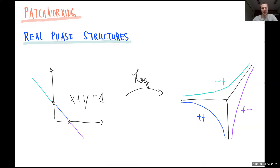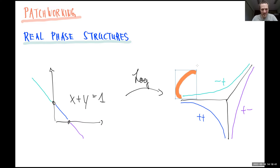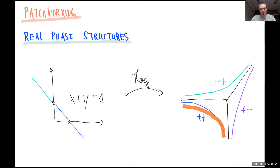We look at the amoeba or tropicalization of a real algebraic line given by x + y = 1. The logarithm map turns this line into three segments in R², and we can mark these segments with the quadrants they come from — for example the blue segment comes from the positive quadrant, so it gets the sign vector (plus, plus). The key idea is that when you converge to the tropical line, for each edge you remember the quadrant making a contribution — the quadrant (plus, plus) for this edge, and so on.